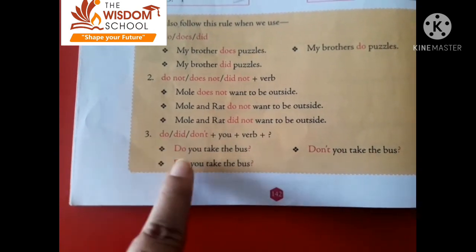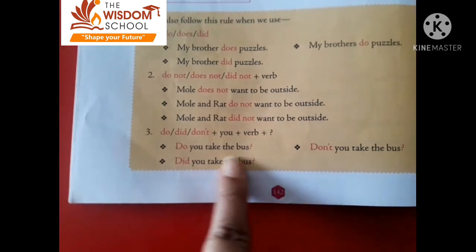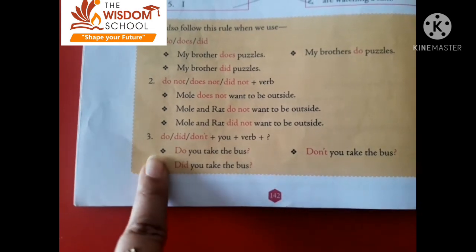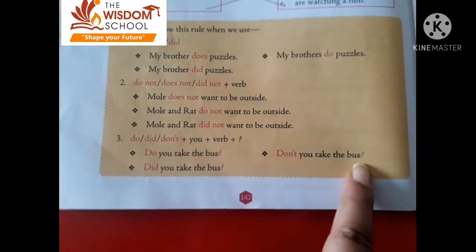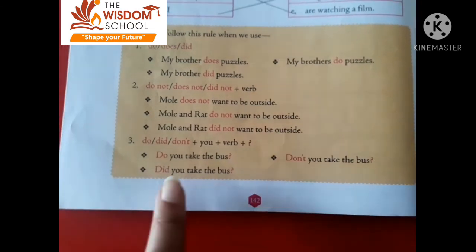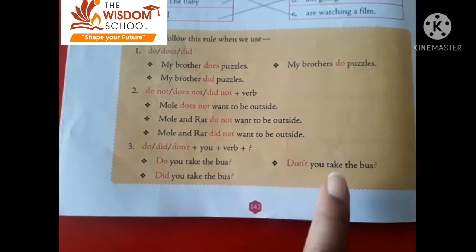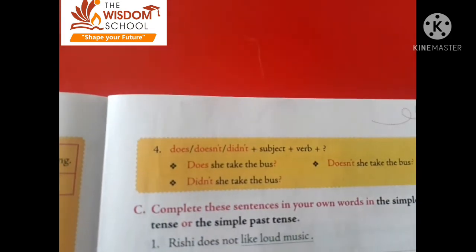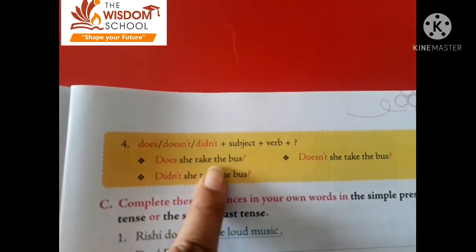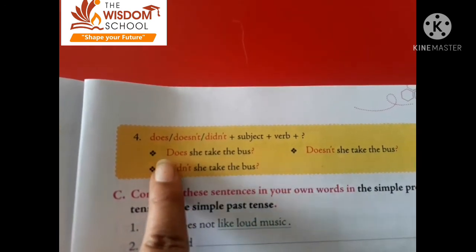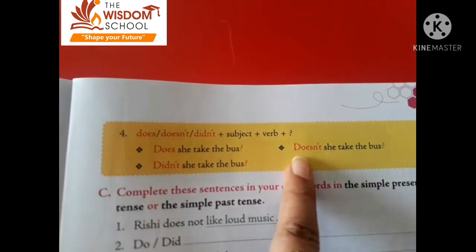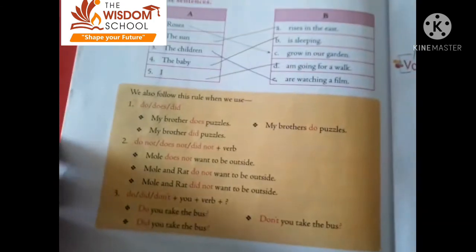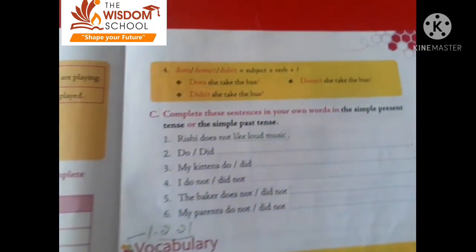In questions, the helping verb comes first, then the rest of the sentence. 'Do you take the bus?' — you के साथ 'do' आएगा। 'Don't you take the bus?' — negative। 'Did you take the bus?' — past। 'Does she take the bus?' — singular है तो singular verb 'does' आएगी। 'Doesn't she take the bus?' 'Didn't she take the bus?' Have you understood the concept of do, does, and did?